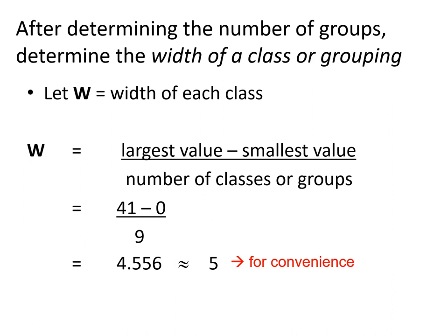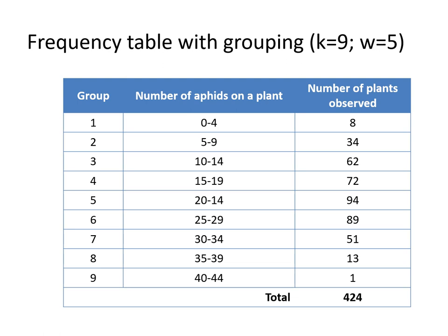So let's apply that to our data. We have our 9 groups, and we said our width is 5. Group 1 would be composed of plants that have 0 up to 4 aphids — that's a range of 5. There were 8 plants that had 0 up to 4 aphids, and so on. You just fill up the rest of the table, and you end up with a total of 424, which is equal to our n. For group 9, the range is 40 up to 44, but our data only goes up to 41 or 42 — that's okay, as long as the data point is within the range.